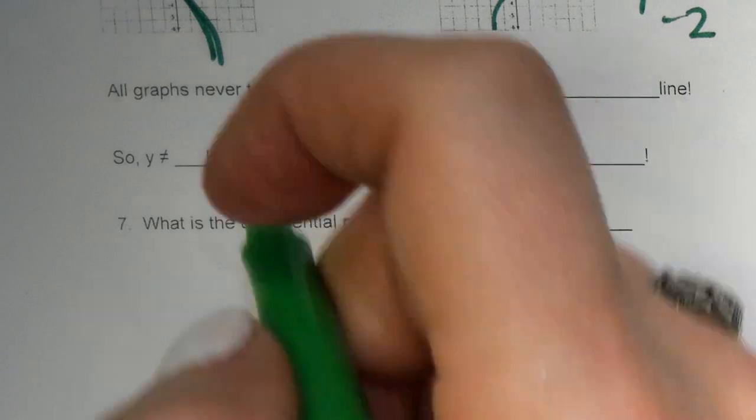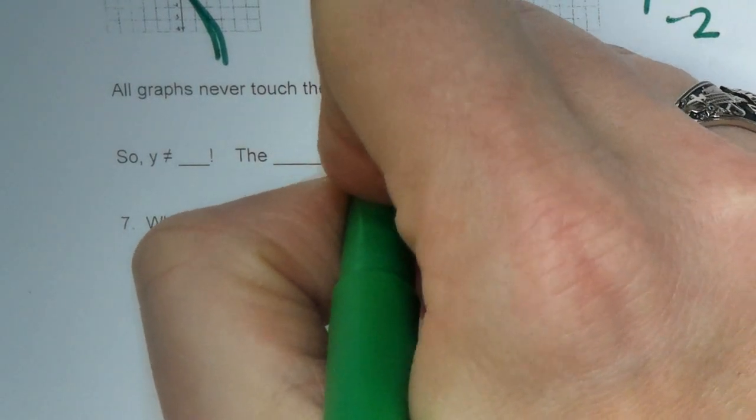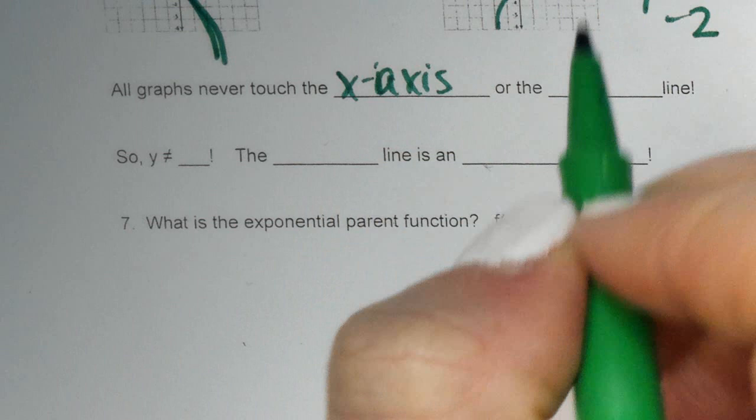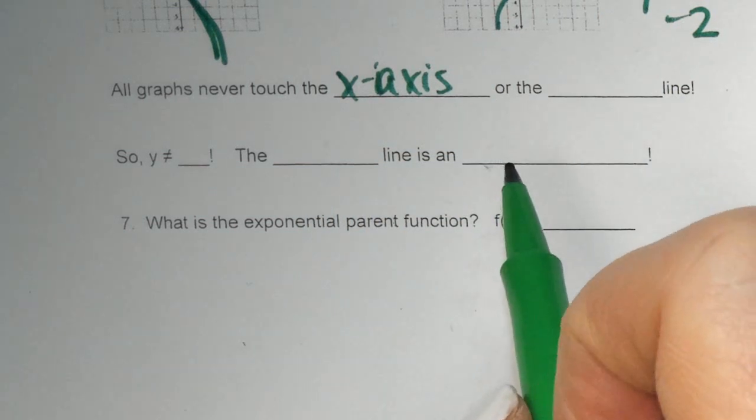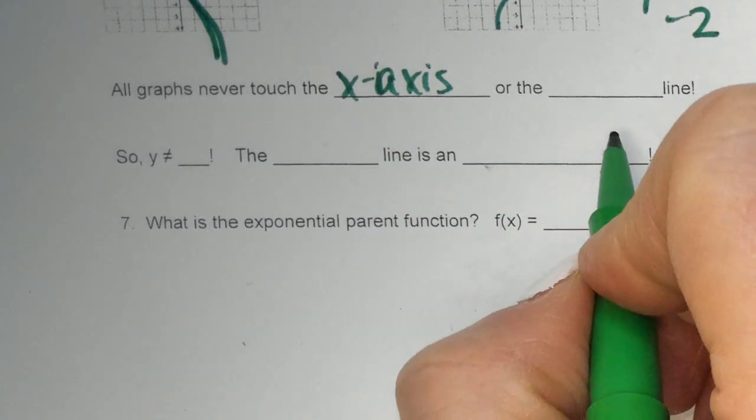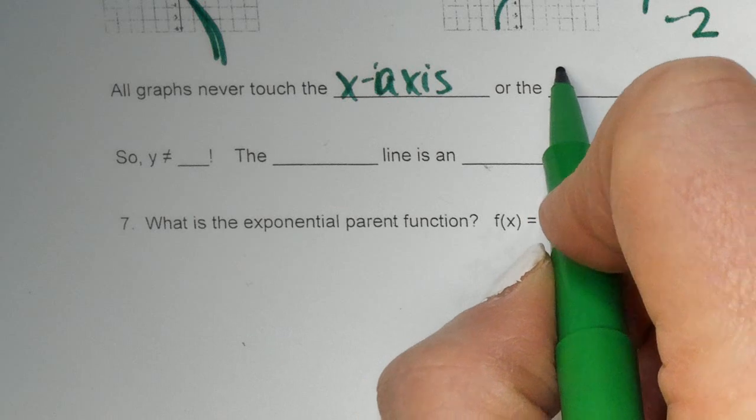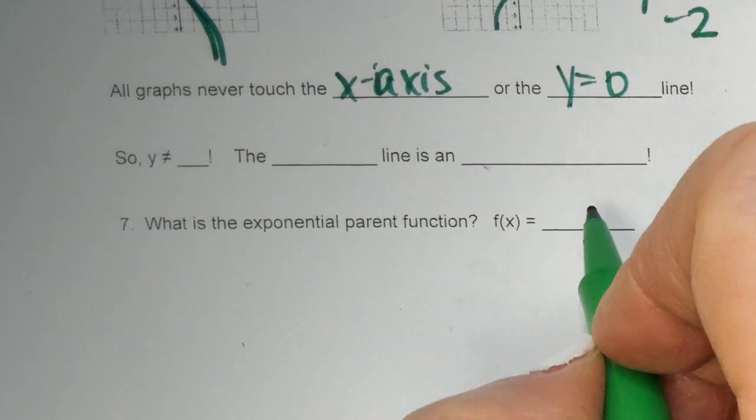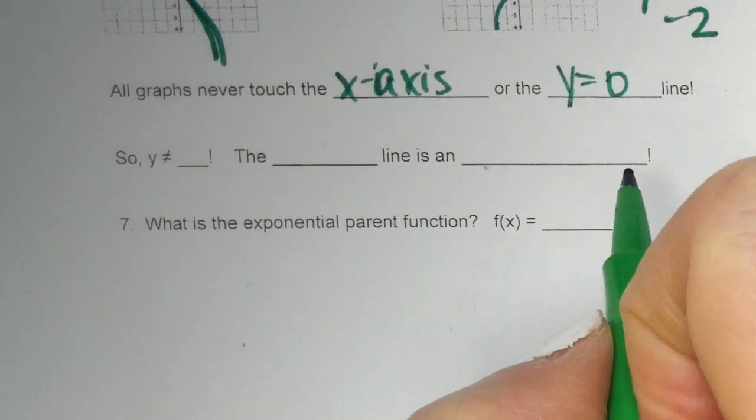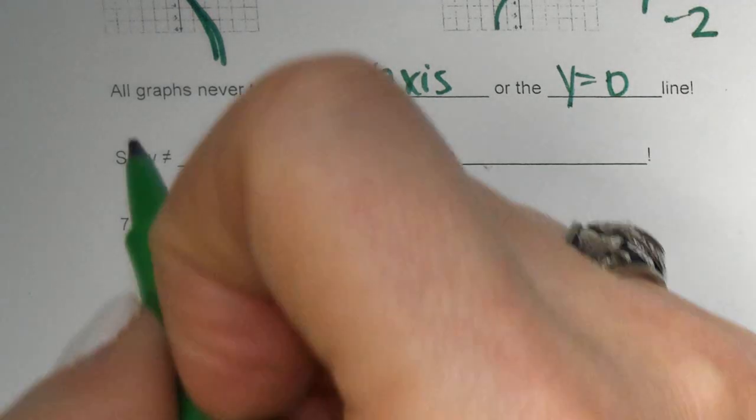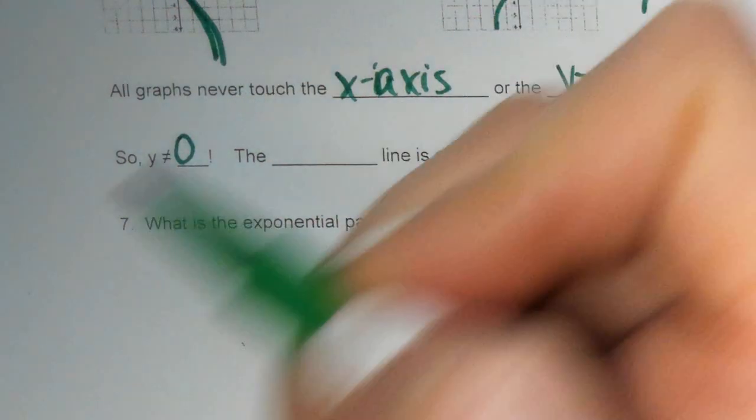So, all graphs never touch the x-axis. That's something that's super important. If you were to really zoom in on that, you could see that it never really touches the x-axis. It never does. Or, or, the y equals 0 line, which is the same thing as the x-axis. The x-axis and y equals 0 are the same thing. So, you can never have y equals 0.